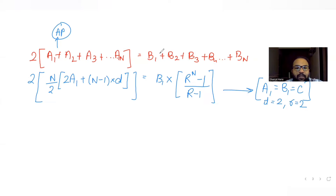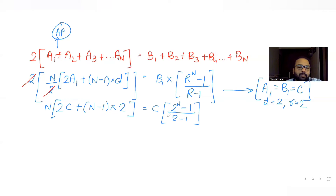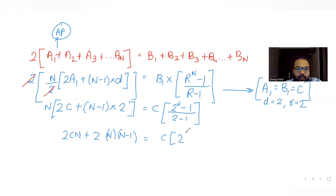After cancelling the 2, the left side becomes n(2c + 2(n−1)), which simplifies to 2cn + 2n(n−1). The right side becomes c(2ⁿ − 1) over 1, since 2 − 1 = 1. So the equation is: 2cn + 2n(n−1) = c(2ⁿ − 1).